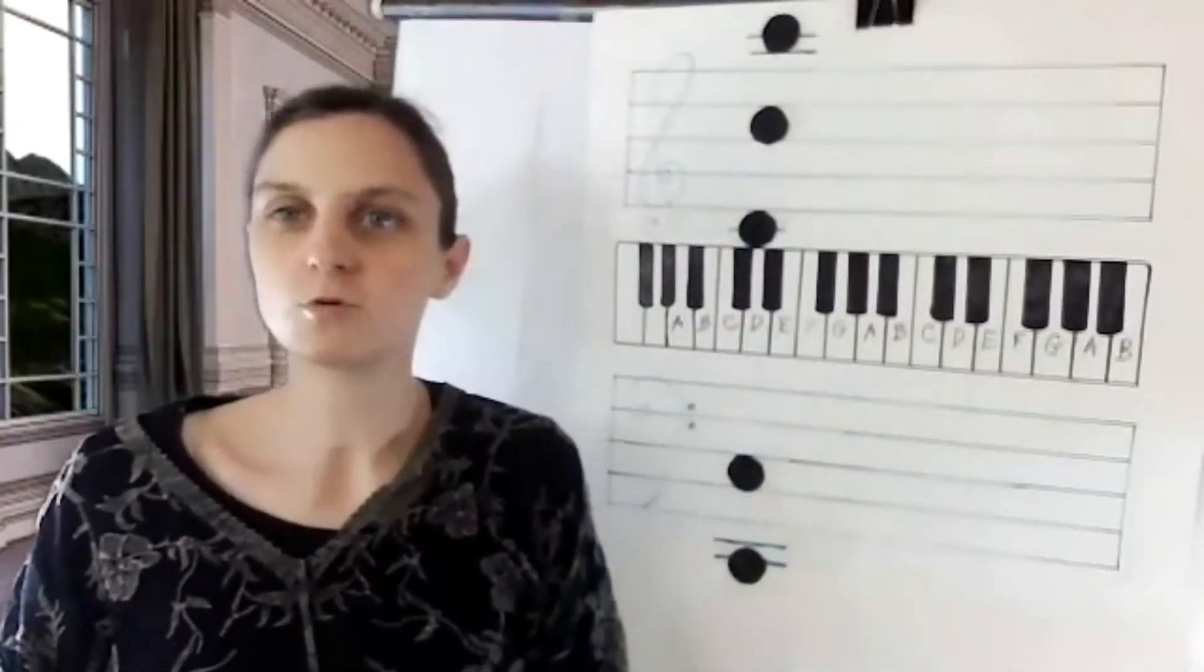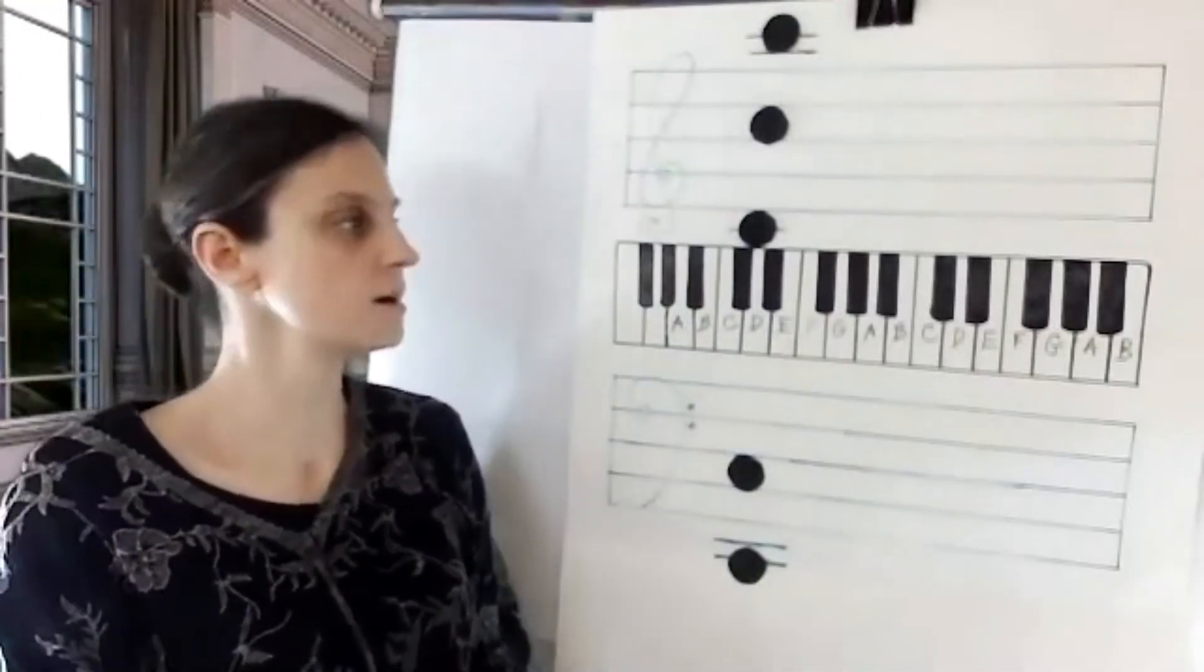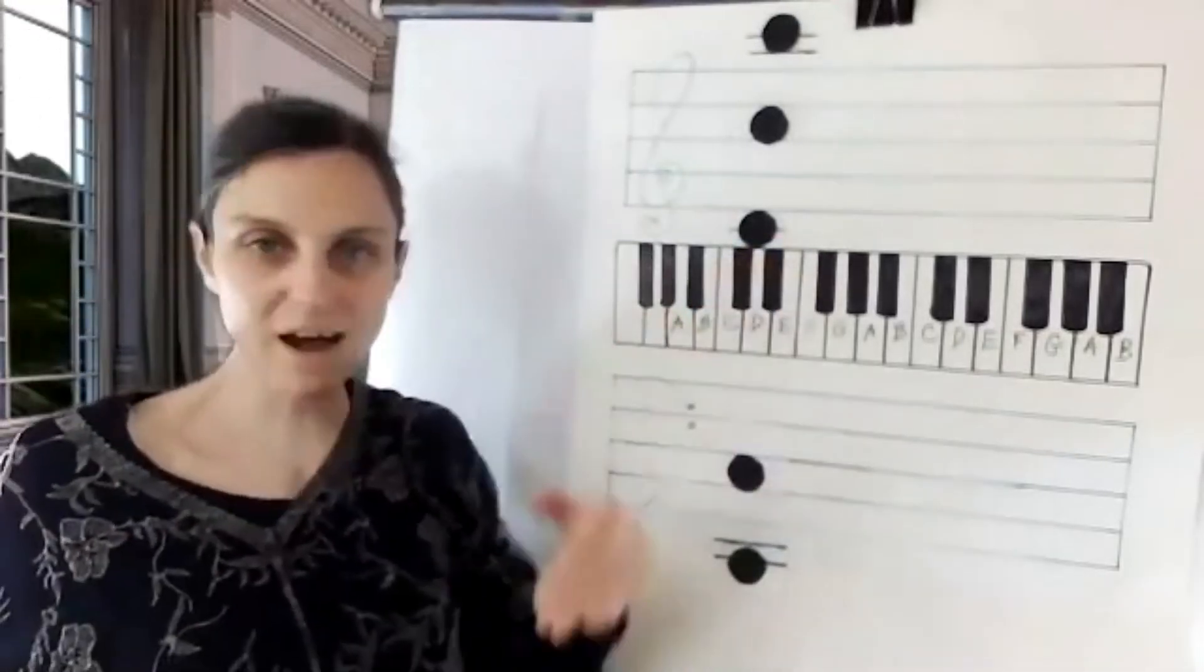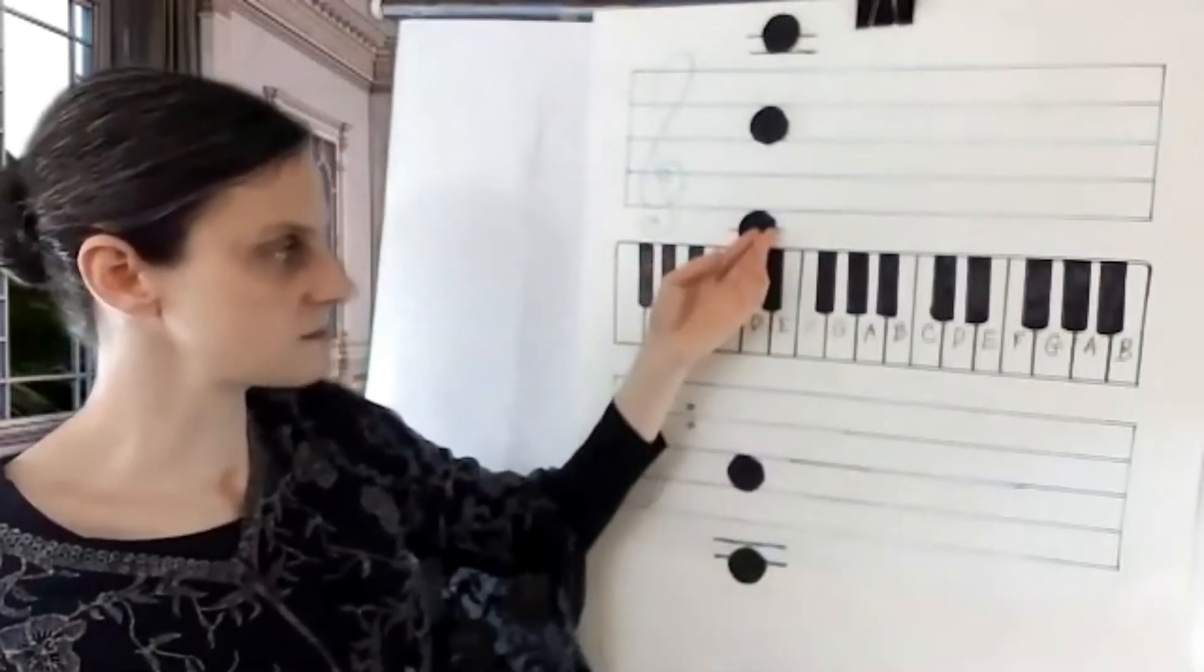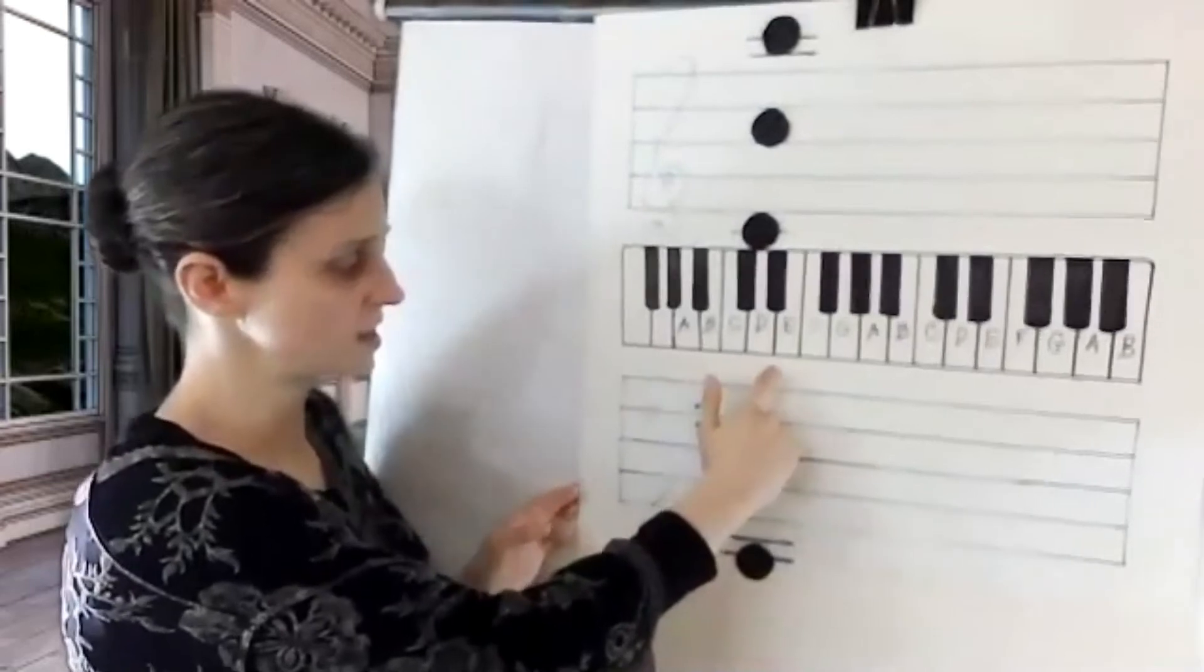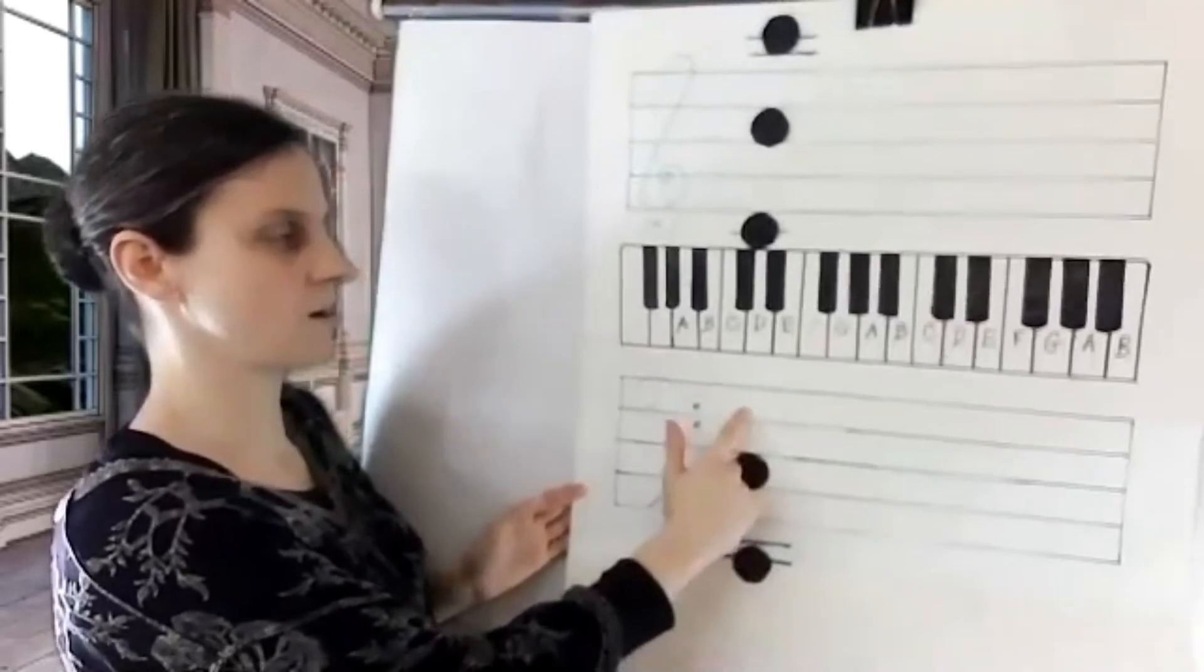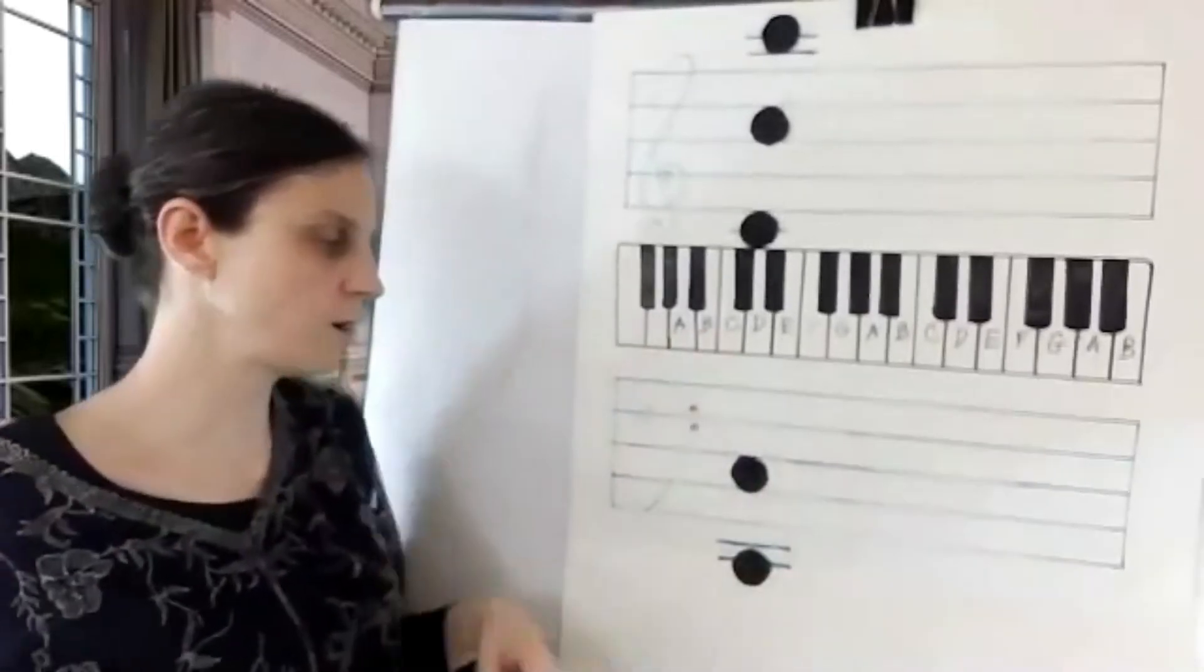So that's one way of doing it. If you wish to find F, you could find the middle C right here and count back to F. So you could say middle C. Then you've got this space right here, which would be B, this top line A, this space right here G, and then you've got F. Or you could say, well, bass staff,